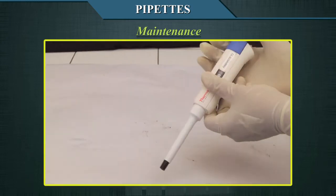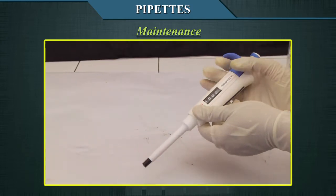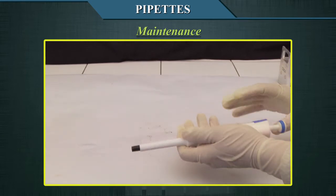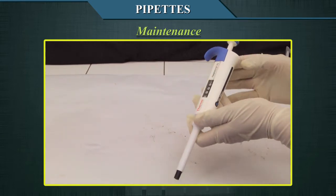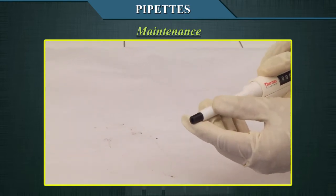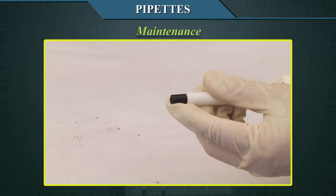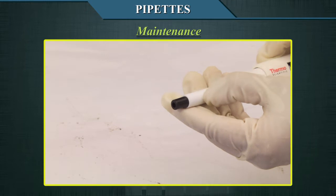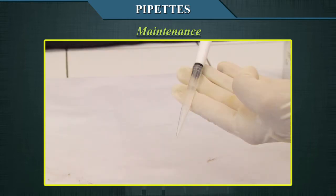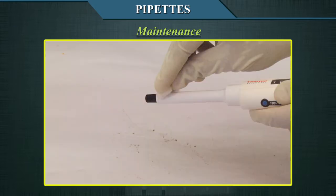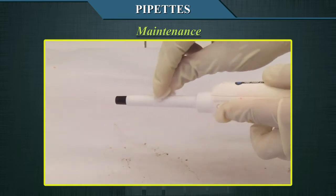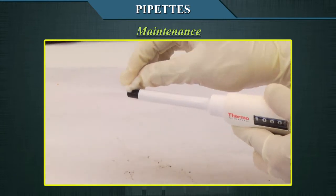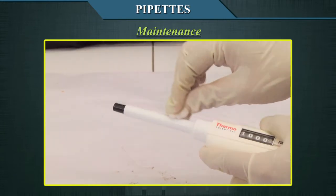Inspect the pipettes to verify the integrity and smooth movement of the mechanisms. Confirm that the tip holder is not displaying distortion or signs of being worn out, as it is essential for the accuracy of measurements. Put on a tip and fill it with distilled water — the pipette must not show any leak. Every day, verify that the pipette is clean. If dirt is detected, it must be cleaned using a suitable solvent or a mild detergent solution.